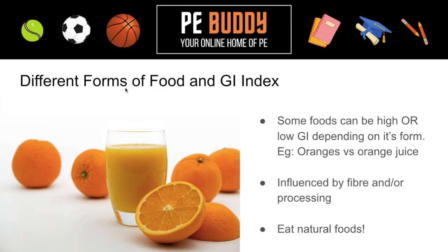This is fascinating — different forms of food influence the GI index. Some foods can be high or low depending on their form. A perfect example is eating natural oranges versus orange juice. An orange has a lower GI than orange juice, essentially because it has fibre. Fibre works to slow the rise of glucose in our blood, which is really useful for maintaining a good blood glucose level. The key message here is to eat food in its natural form, as this is much healthier.